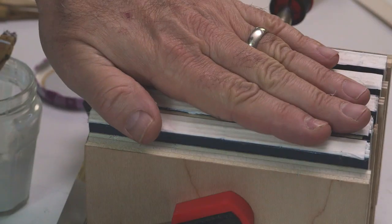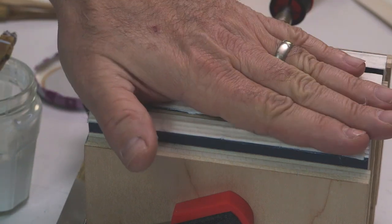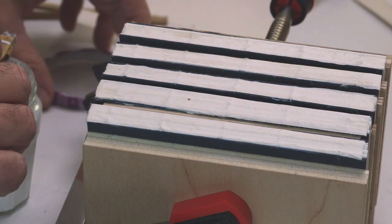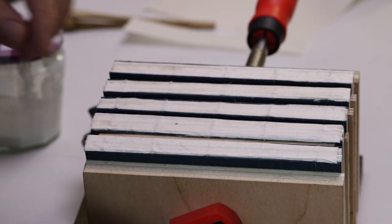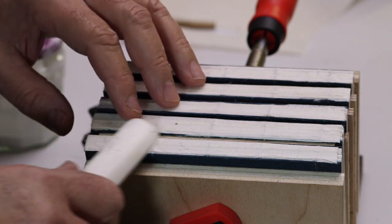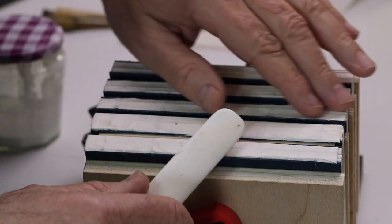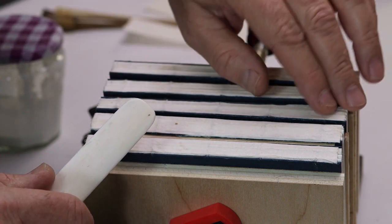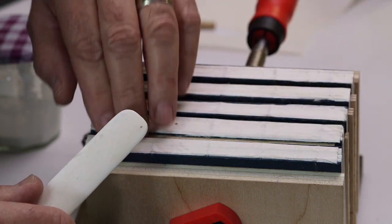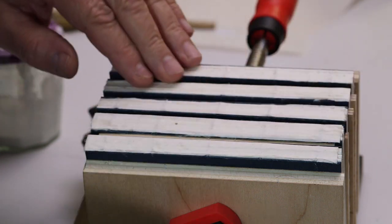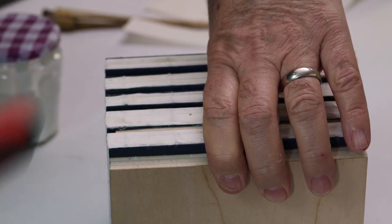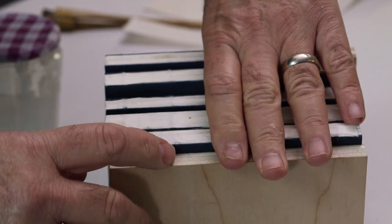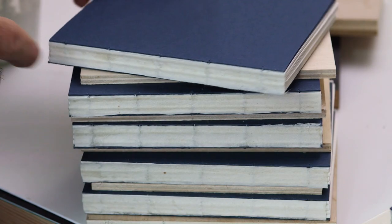There we are, I'll let that sit for about an hour so it's dry. I can take my finger or bone folder and just make sure that all of the spine liners are pasted down uniformly. Remove it from the clamp. The spine liner is dry.